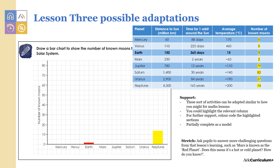Stretch pupils by asking them to answer a challenge question such as: Mars is known as the red planet — does this mean it's a hot or cold planet? How do you know?